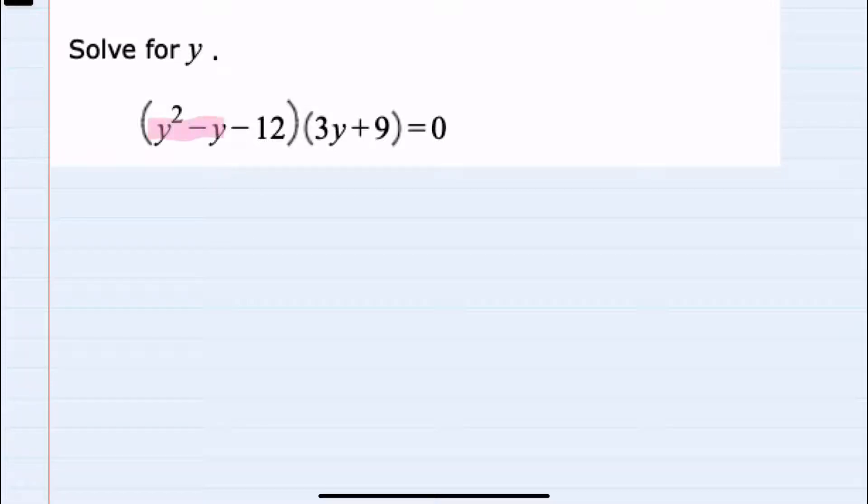So either the first one, y squared minus y minus twelve, must be zero, or the second one, three y plus nine, must be zero. And by solving each of these we'll be able to find our solutions.